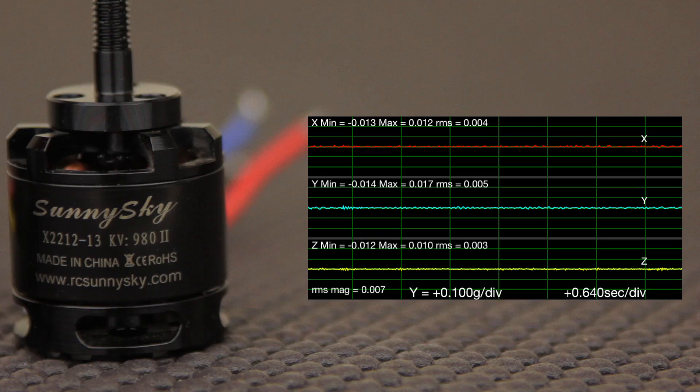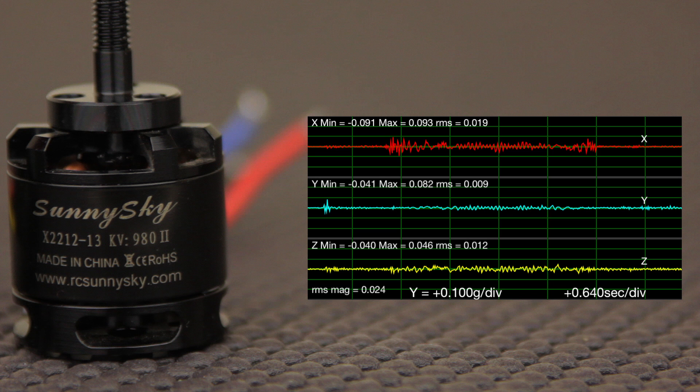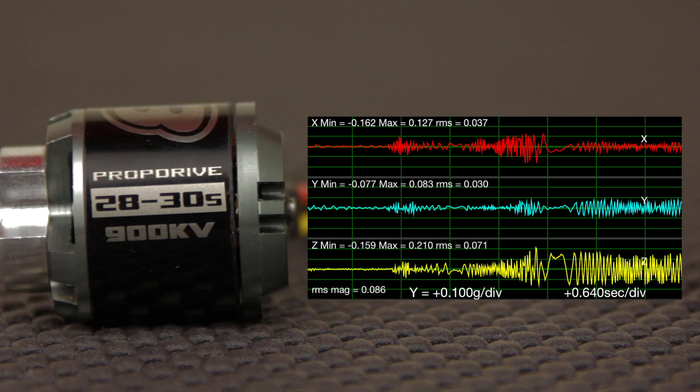So as you can hear, there's quite a difference. Here's a SunnySky motor, here's four SunnySky motors after about a week of use, and here's one NTM motor after a week of use.